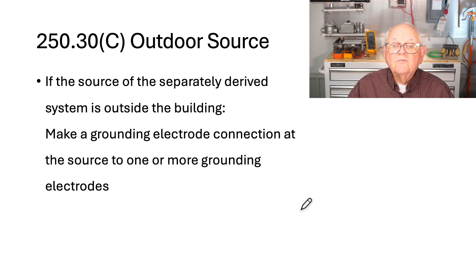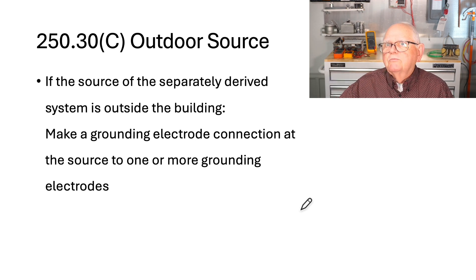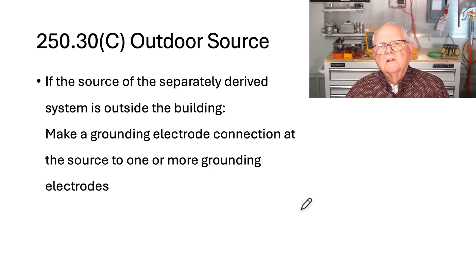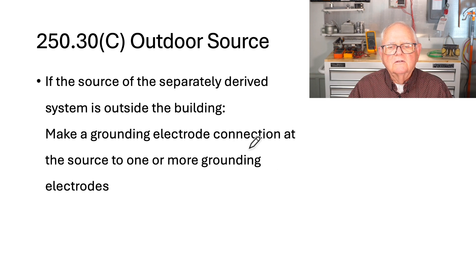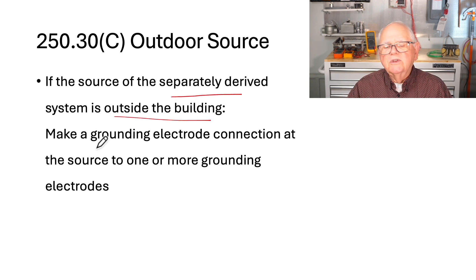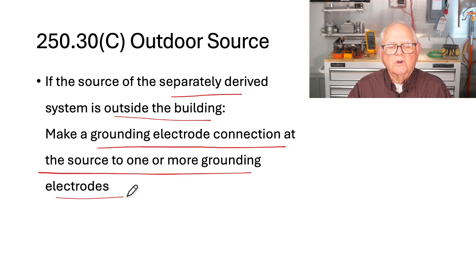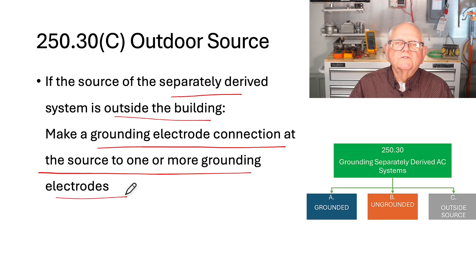Finally, what if the source is an outdoor generator outside the building it's serving? That's considered an outside source. Where do you have to ground it? At the generator itself. If the source of the separately derived system is outside the building, you make a grounding electrode connection at the source to one or more grounding electrodes. That, in a nutshell, covers the rules for grounding and bonding a separately derived system.